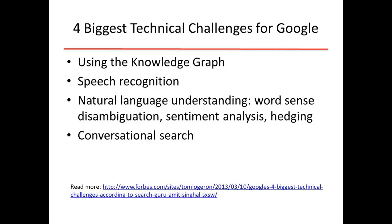Two is speech recognition — no need to explain that. Third is what they call natural language understanding, which covers word sense disambiguation, understanding that Apple could be a fruit or a company, sentiment analysis, is this blog post happy or sad, and hedging — are you actually making a statement or hedging around it? The last one is conversational search, where you interact with a computer through natural language. You don't use keyword-based queries; you use natural language. This list is awesome because it's all natural language processing, computational linguistics. No big data, no wearable technology, no apps. It's all NLP.